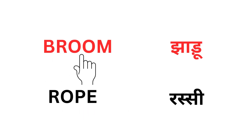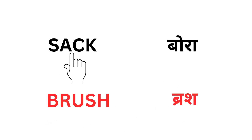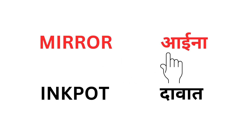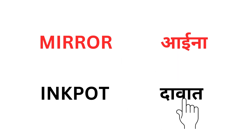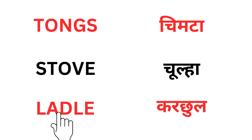Broom — Jhaadu. Rope — Rassi. Sack — Bora. Brush — Brush. Mirror — Aina. Inkpot — Davat. Tongs — Chimta. Stove — Chulha. Ladder — Karchul.